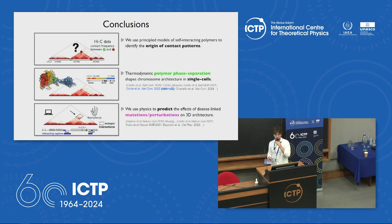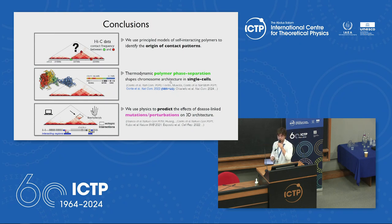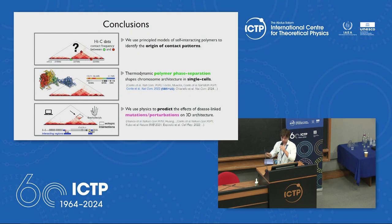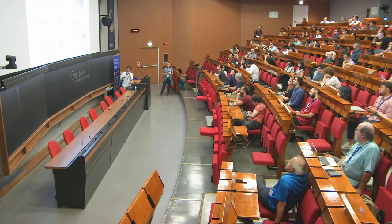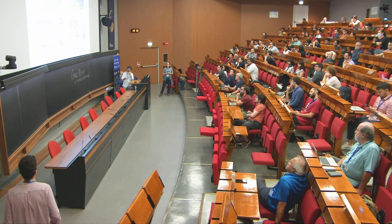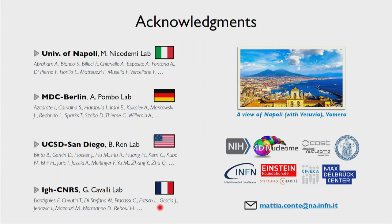Other mechanisms are now clearly playing a role beyond cohesin. We have also mixed loop extrusion and phase separation in a recent paper with nice results. Finally, if you have models validated at the single-molecule level, you can make applications — for example, predicting what happens when a disease-associated mutation impacts genome 3D structure. Thanks to collaborators: Mario in Napoli, experimentalists in Germany like Pombo, Stefan Mundlos, Bin Ren, and also Long Kai in the US and Giacomo Cavalli in France.